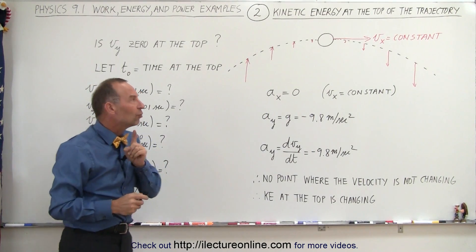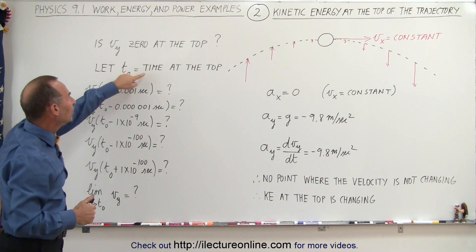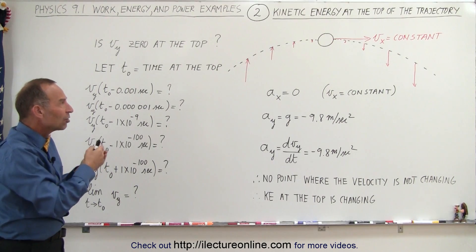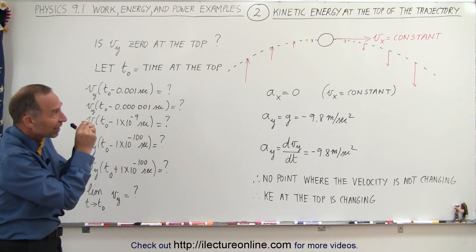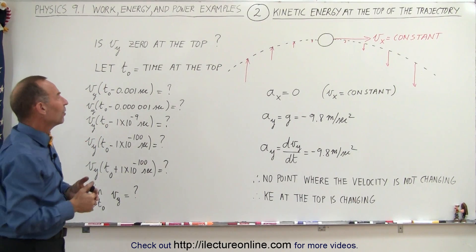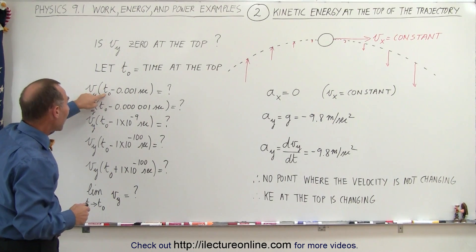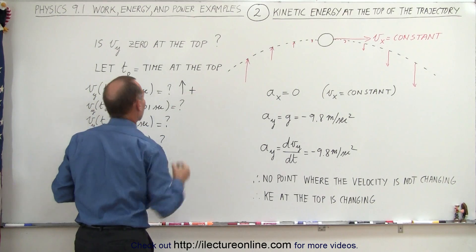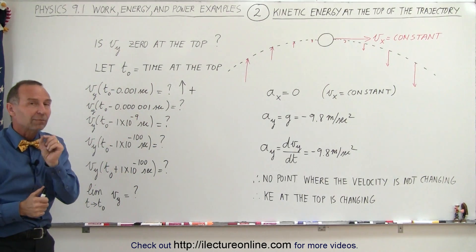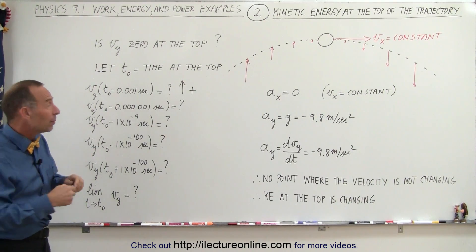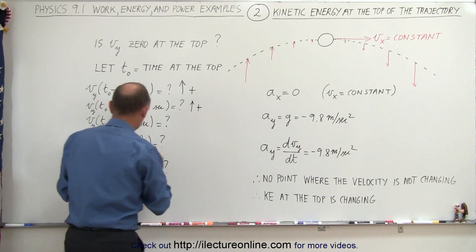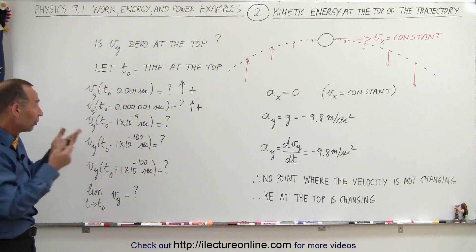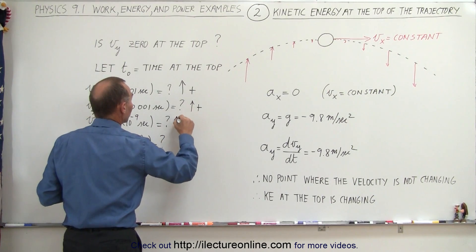That's an interesting question. If we let t-naught be the time at the very top, then if we are just a fraction of a second before that time, the object should be moving upward, so we have a positive velocity. And a fraction of a second after that time, the object should be going down, which means a negative velocity. So looking at the velocity in the y direction at time t minus one one-thousandth of a second, the velocity is still positive — still going upward. What if we look at it one millionth of a second before the very top? It should still be moving upward — the velocity is positive and still moving upward.